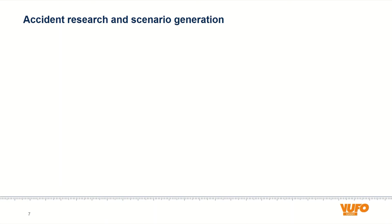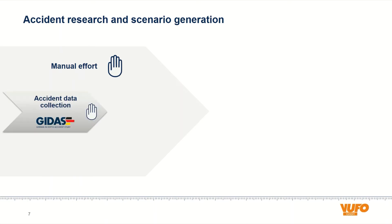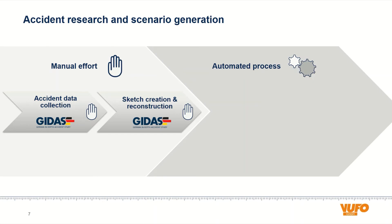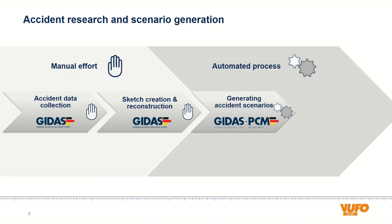At the beginning of the development process the focus is on manual effort, visualized by the hand symbol. The collection of accident data on the scene as well as the creation of an accident sketch and the reconstruction require mainly manual work. After the manual preparation of the accident information we added an automated process for scenario generation, represented by the two gear wheels. This includes the automated creation of accident scenarios for the GEDAS PCM and the transfer of the accident scenarios to IPG.